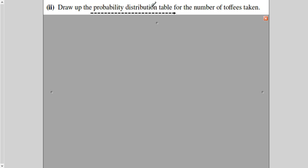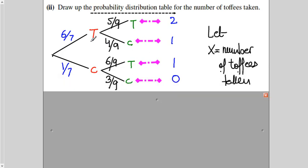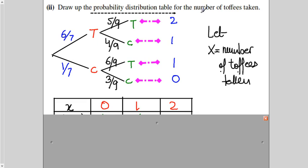The second part asks us to draw up the probability distribution table for the number of toffees taken out. Looking at the tree diagram: both toffees gives 2; toffee then chocolate, or chocolate then toffee, gives 1; and both chocolates gives 0 toffees. So the random variable X, representing the number of toffees taken, can be 0, 1, or 2.